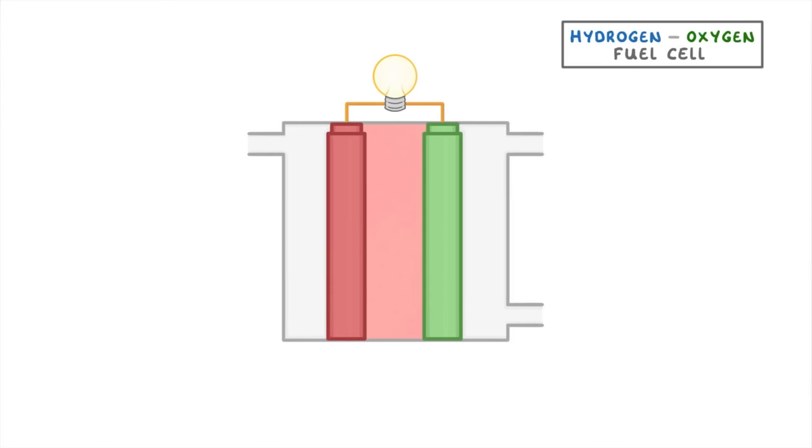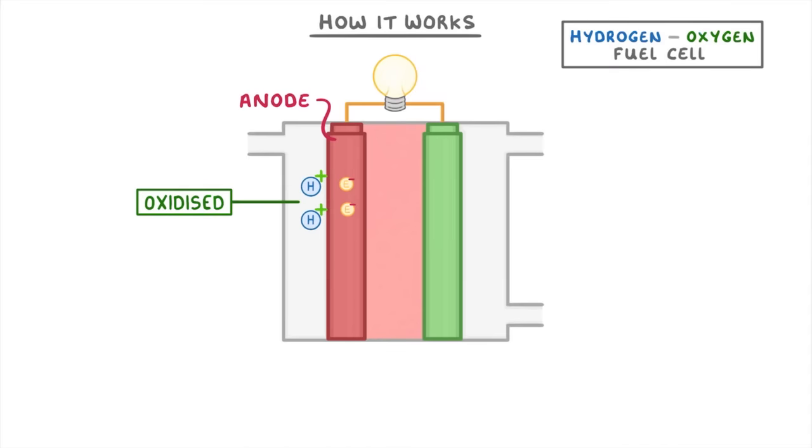Now that we know the structure of the fuel cell, we can run through how it actually works, step by step. The first thing to happen is that hydrogen comes in from the left, and is then oxidized by the anode, which means that each hydrogen atom loses an electron to become a hydrogen ion. The equation for this loss of electrons looks like this, and we'll come back to it in a moment.